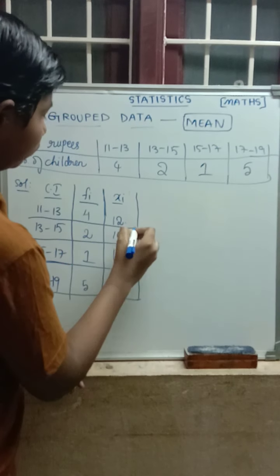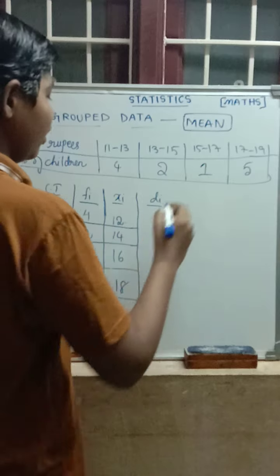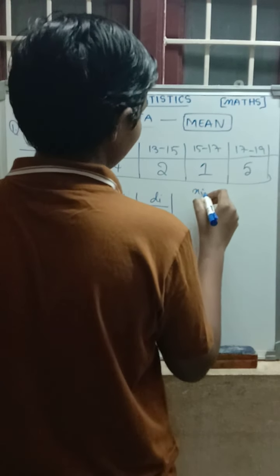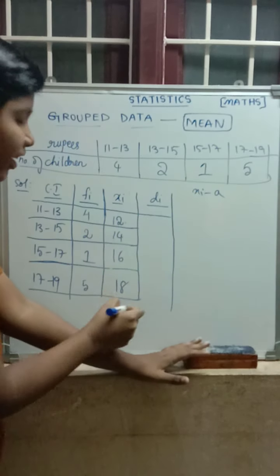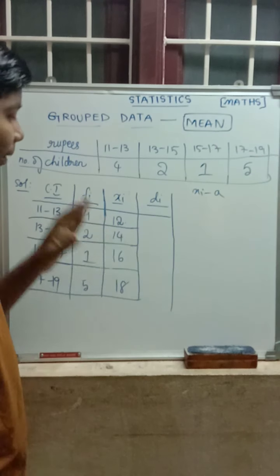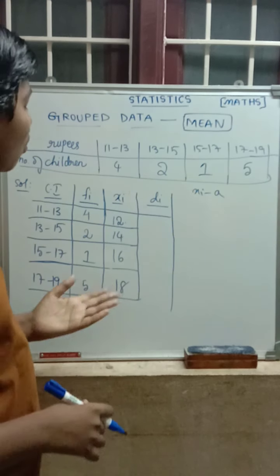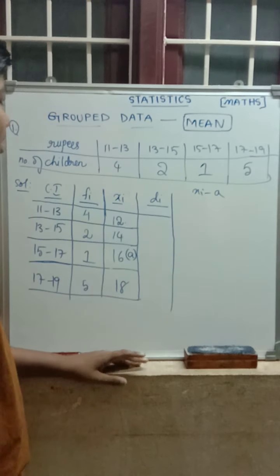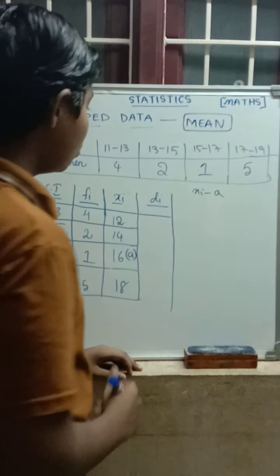Now we find Di, which equals Xi minus A. The formula for Di is Xi minus A. From the Xi values 12, 14, 16, 18, we have to choose A. We can take any value but if we take the middle term it will be easier. There is no exact middle term here, so we can take 14 or 16. I am taking A as 16. Even if we take 12, 14, or 18, we will get the same answer, but taking the middle value makes subtraction easier.